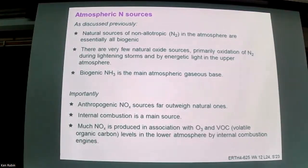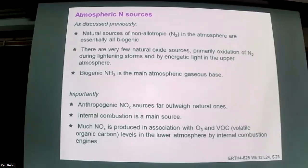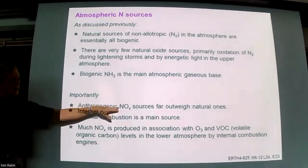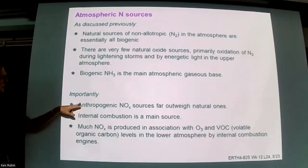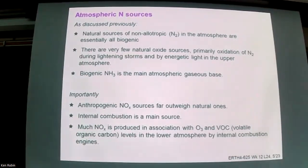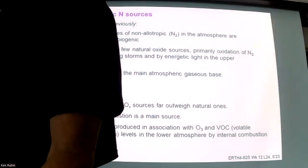There aren't many non-allotropic natural sources of nitrogen in the atmosphere, and very few acid oxide sources are non-anthropogenic. There's a small amount of biogenic ammonium added in temperate wet forests, but it's very localized and not a large flux. The anthropogenic NOx source is the primary source, far outweighing others — even more so than for sulfur. Internal combustion is the main driver, and a lot of this nitrogen oxide goes into the atmosphere in a complicated way during combustion along with ozone involved in the carbon.